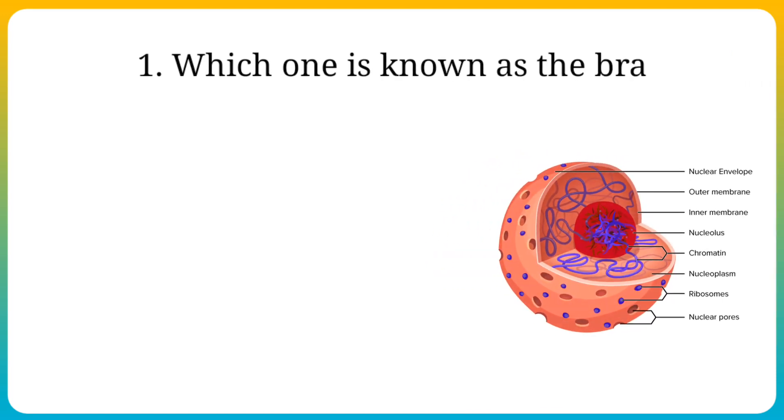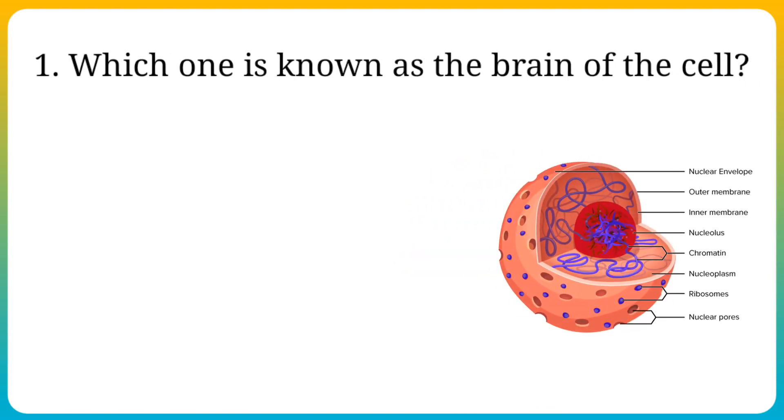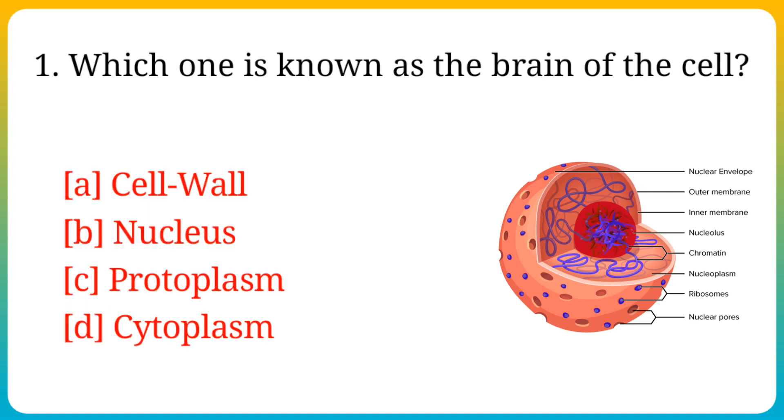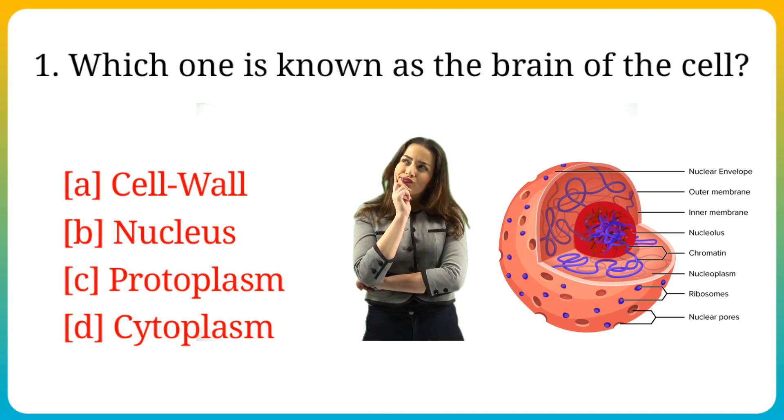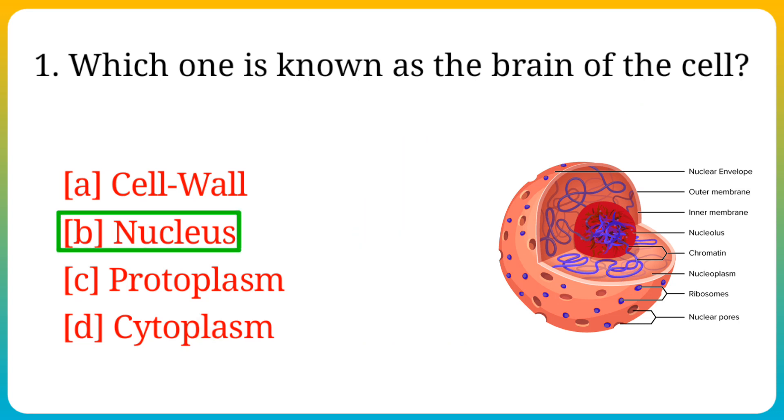Question number 1. Which one is known as the brain of the cell? Options are: A. Cell wall, B. Nucleus, C. Protoplasm, D. Cytoplasm. Answer is option B. Nucleus.